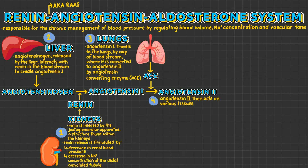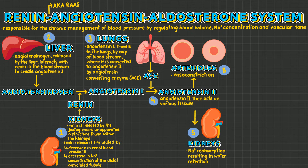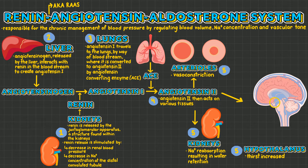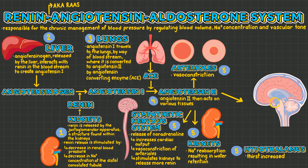Angiotensin 2 then acts on various tissues, stimulating vasoconstriction of arterioles, the kidneys to reabsorb sodium resulting in water retention, the hypothalamus to increase thirst, and the sympathetic nervous system to release noradrenaline. Noradrenaline then causes an increase in cardiac output, further vasoconstriction of arterioles, and stimulates the kidneys to release further renin.